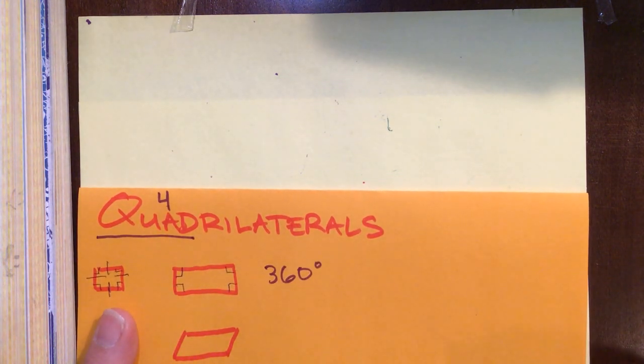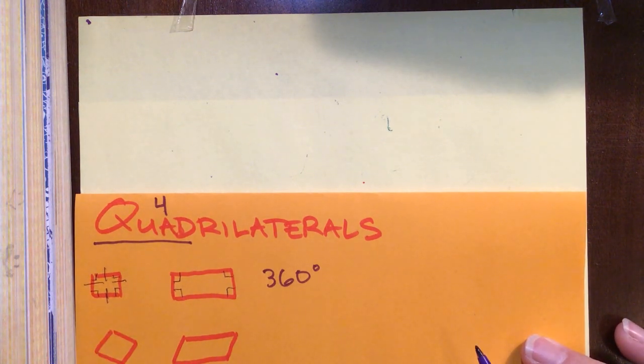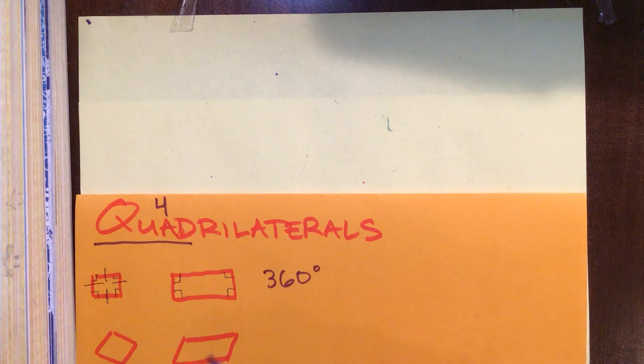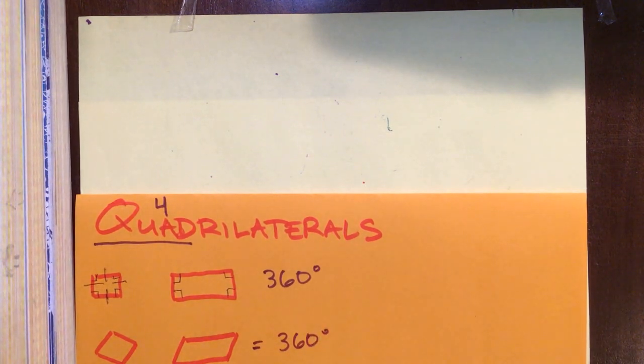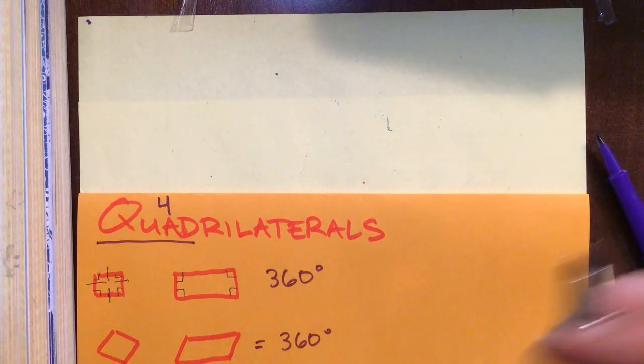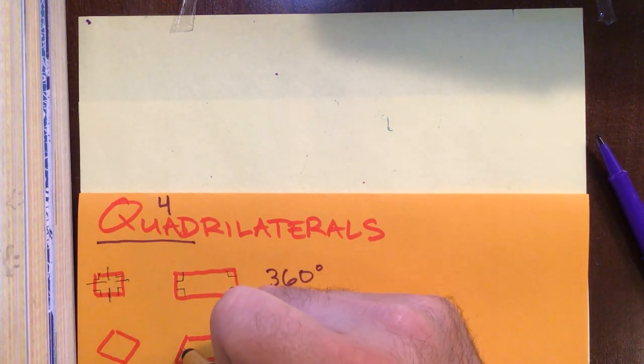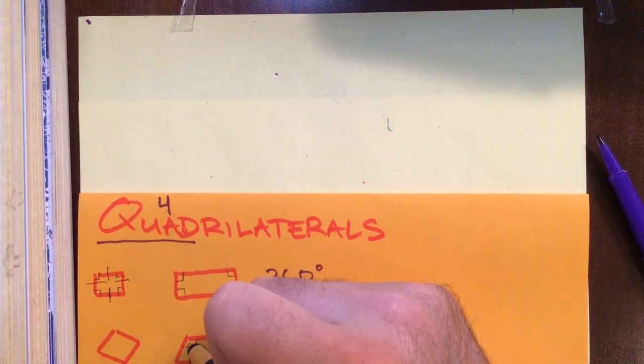Now it's slanted. Same thing with the square, he can turn it into a rhombus or a diamond. This angle is now less than 90 but this is now greater than 90, and they're going to end up still equaling 360 degrees. However, I want to show you something, these sides are still parallel.